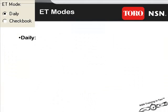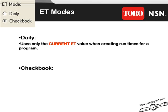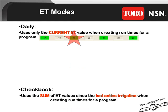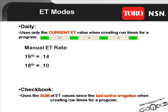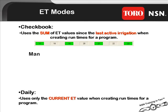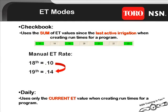In the daily mode, only the current value for today will be applied. In the checkbook mode, the sum of ET values will be applied based on the last active day. For example, assume that today is the 19th and the TEAS program schedule is set for every other day. If the ET value for today was 14 one-hundredths of an inch and the value for the 18th was a tenth of an inch, the daily mode would still only apply today's value of 14 one-hundredths. In checkbook mode, however, SitePro would attempt to make up for the inactive day on the 18th, adding that missed tenth to today's 14 one-hundredths, applying 24 one-hundredths of an inch today.